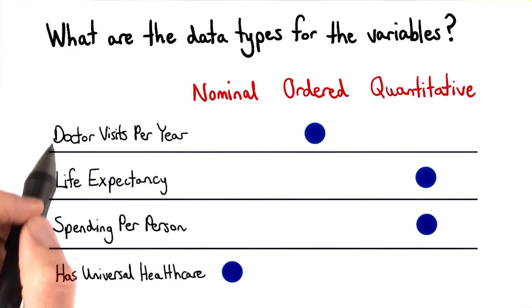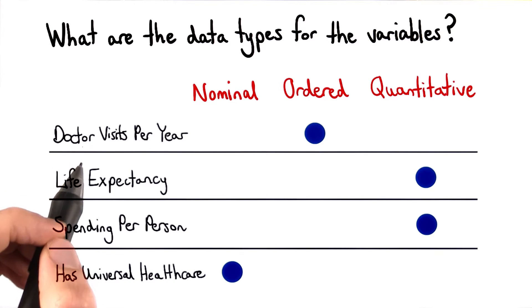Now, among these four variables, I think doctor visits per year was probably the hardest to identify. Let's take a look at why.